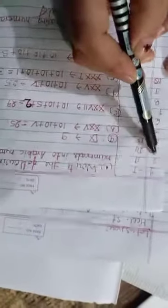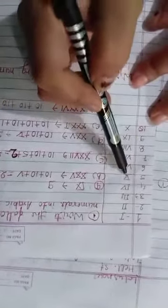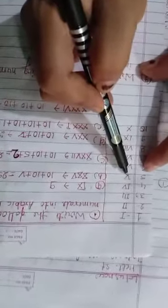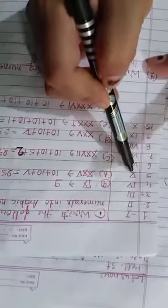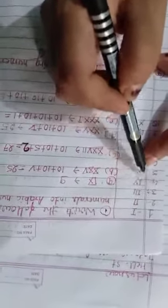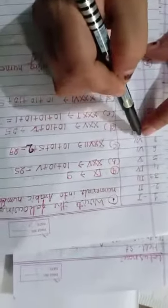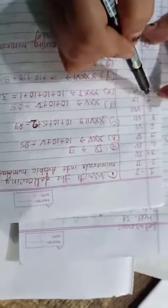1 is I; 2 is double I (II); 3 is triple I (III); 4 is IV — because if you subtract 1 from 5, you get 4, so write I before V. 6 is V plus I; 7 is V plus II; 8 is V plus III (VIII); 9 is IX; and 10 is X.